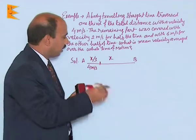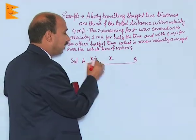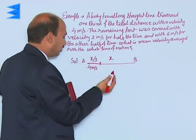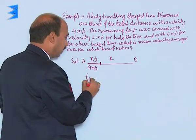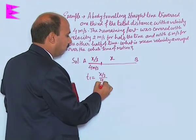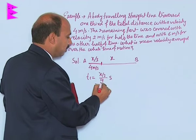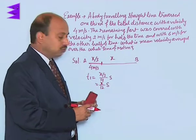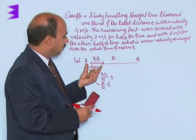Now first you can calculate time taken by the body to travel one-third. So you can write here, let this time be t1. So we can write t1 is equal to x upon 3 by 4 seconds, so that will be x upon 12 seconds. This is the time taken by the body to travel one-third.